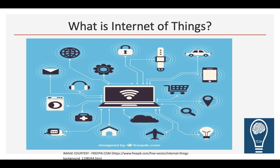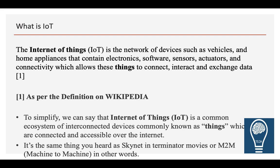So basically, what exactly is IoT? What is Internet of Things? It's a set of connected devices which will help you make life better. In terms of the definition, what Wikipedia says is: Internet of Things is a network of devices such as vehicles, home appliances, electronic gadgets, combination of softwares, surrounding sensors, actuators, potentiometers, and a connection channel, which allows these things to connect, interact, and exchange data for better analytics, better information, better lifestyle, and so many other things.